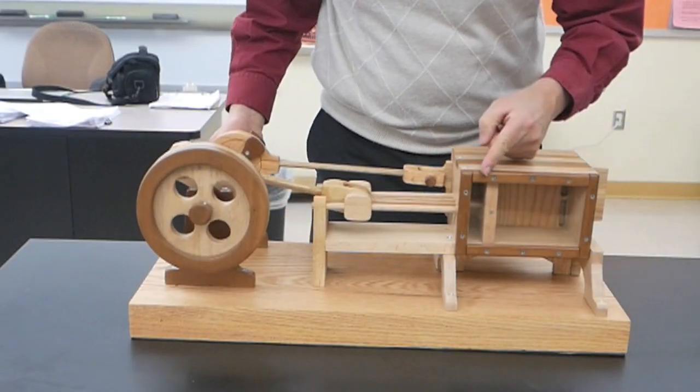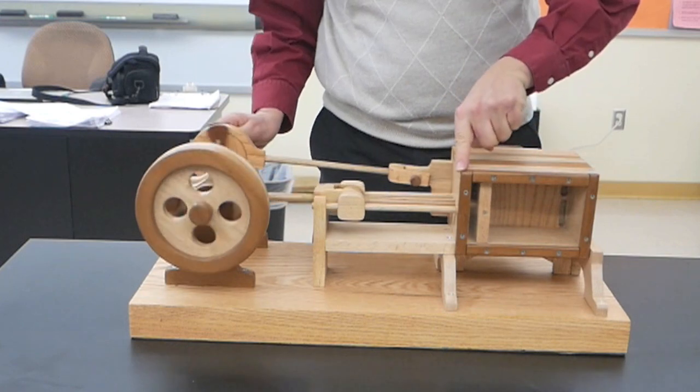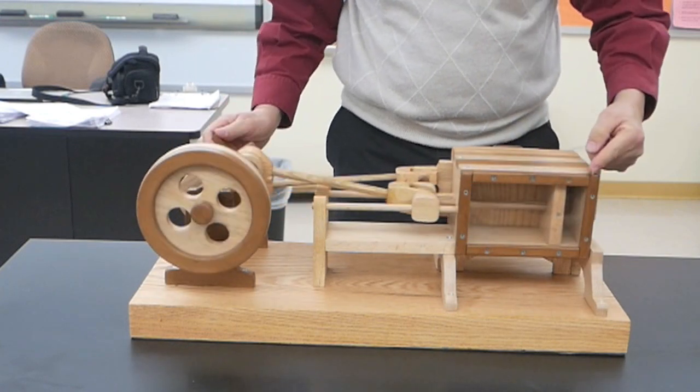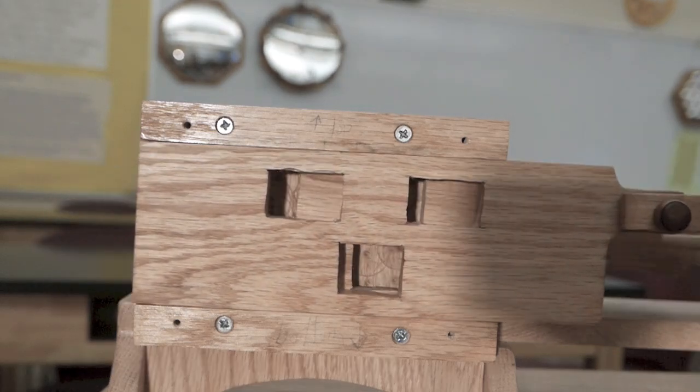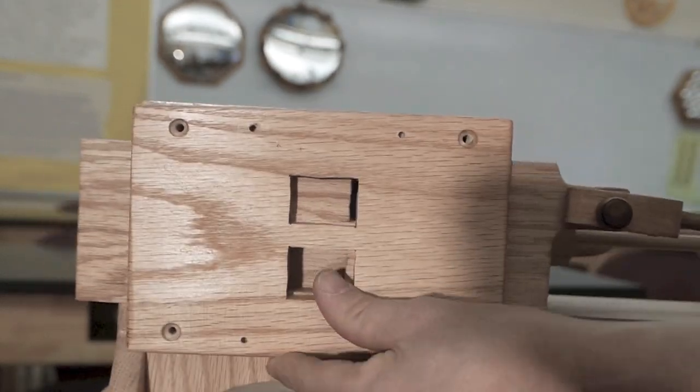So air comes in this chamber, pushes the piston forward, changes direction, pushes it back again, and then forward and then back. It's simply a reciprocating motion back and forth that's regulated by this sliding panel.